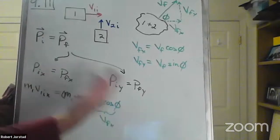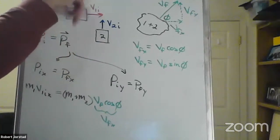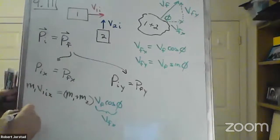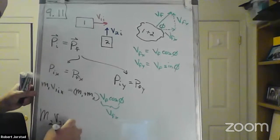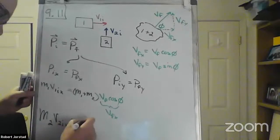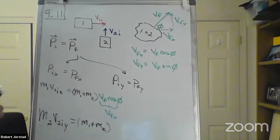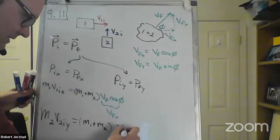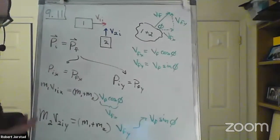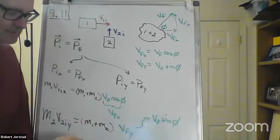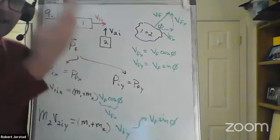Similarly, I could write another equation for the Y direction — only 2 is there in the Y direction, but 1 is not. So: M2 V2 initial Y equals (M1 plus M2) times V final sine of phi. Once I have V final X and V final Y, I don't know what V final is yet, so it might make sense to square them and add them together, or take the inverse tangent to get the angle.